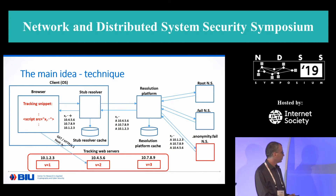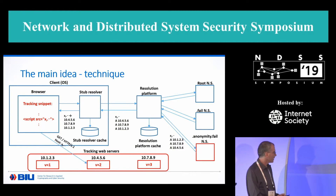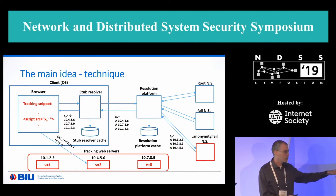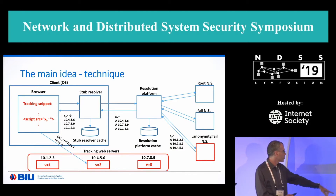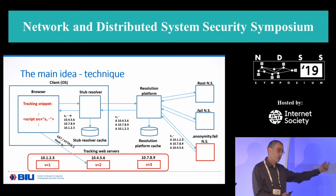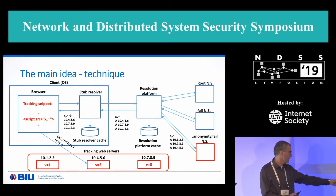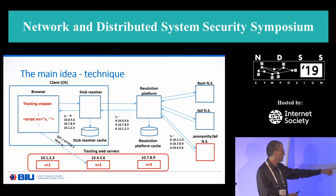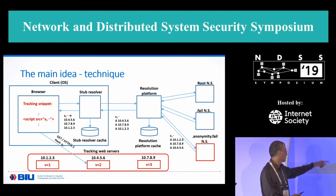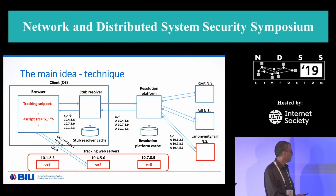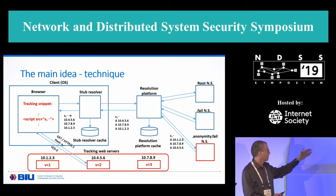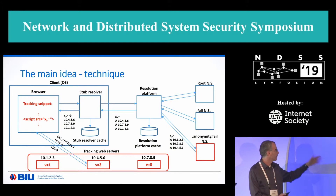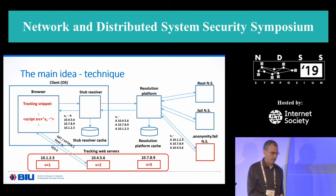The tracking server — each tracking server — responds with a different value of V. So in this case, V, which is the encoding of 10.4.5.6, will be sent back to the browser. Whereas if the browser had accessed 10.1.2.3, V would have been equal to 1. In our case, V is equal to 2. The browser and the snippet collect the V values for X1, X2 through XN, and can then encode and compose the full ID.